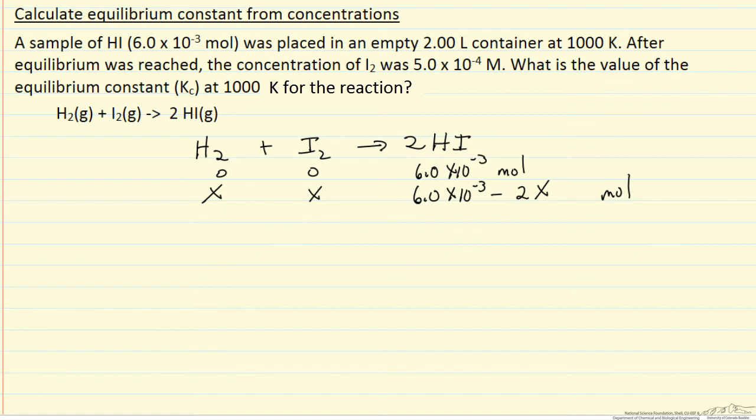The problem tells us that the concentration of iodine is 5.0 × 10⁻⁴ molar. This also means the concentration of hydrogen is the same number, since we can see it's the same.